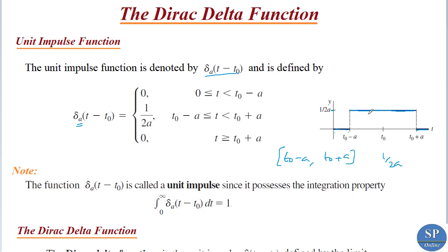This is the graph of the unit impulse function. It is called the unit impulse function because it possesses unit area, meaning the integral from 0 to infinity of δₐ(t − t₀) dt equals 1.